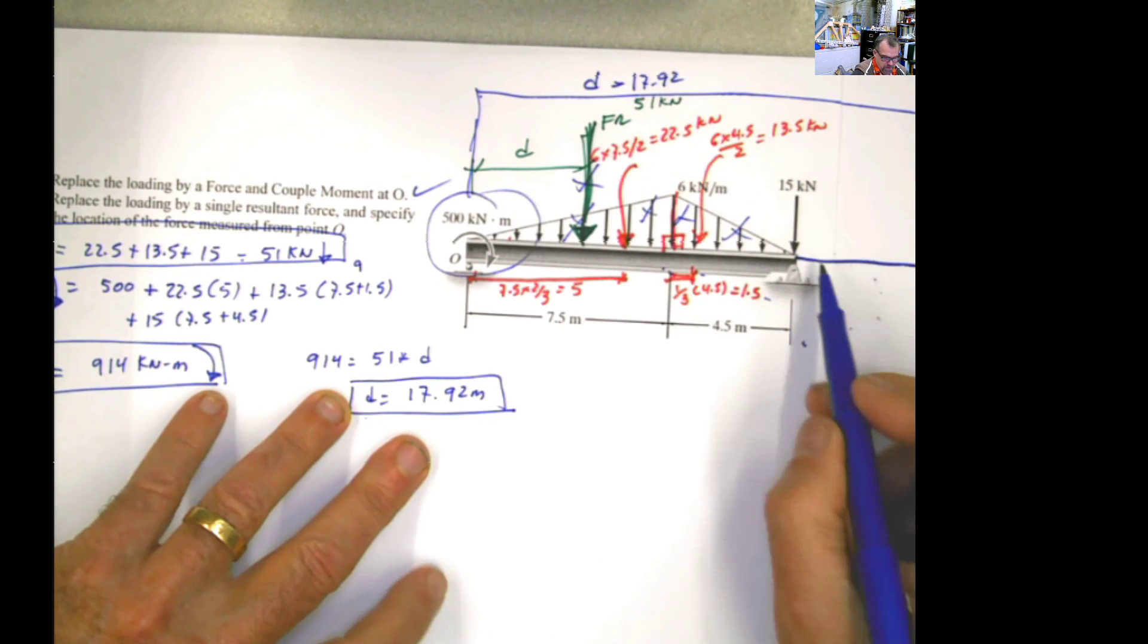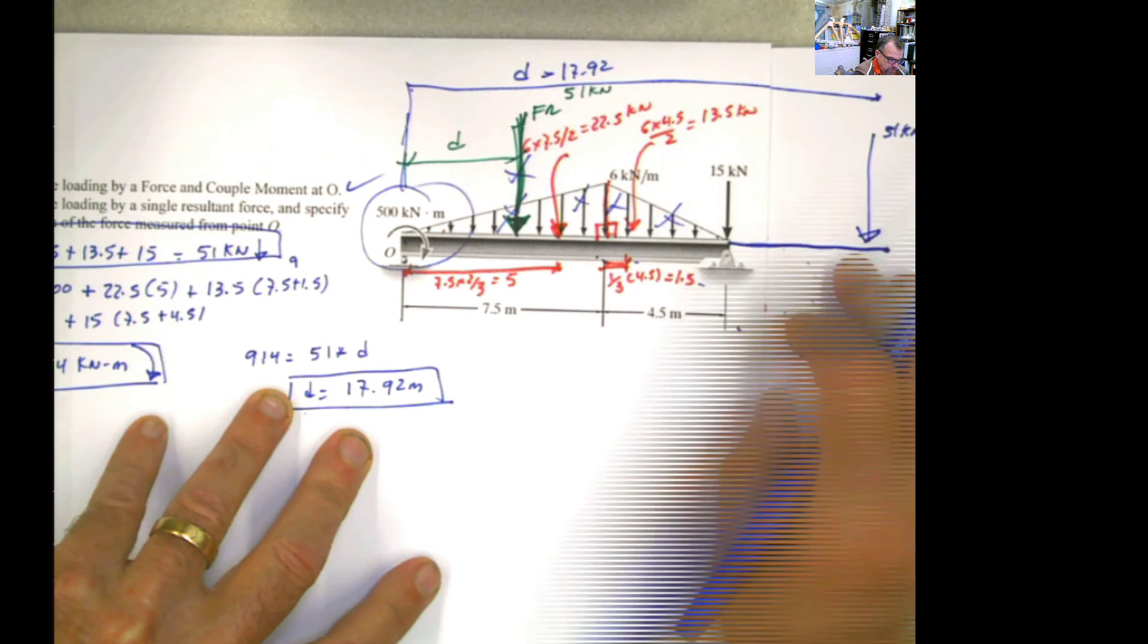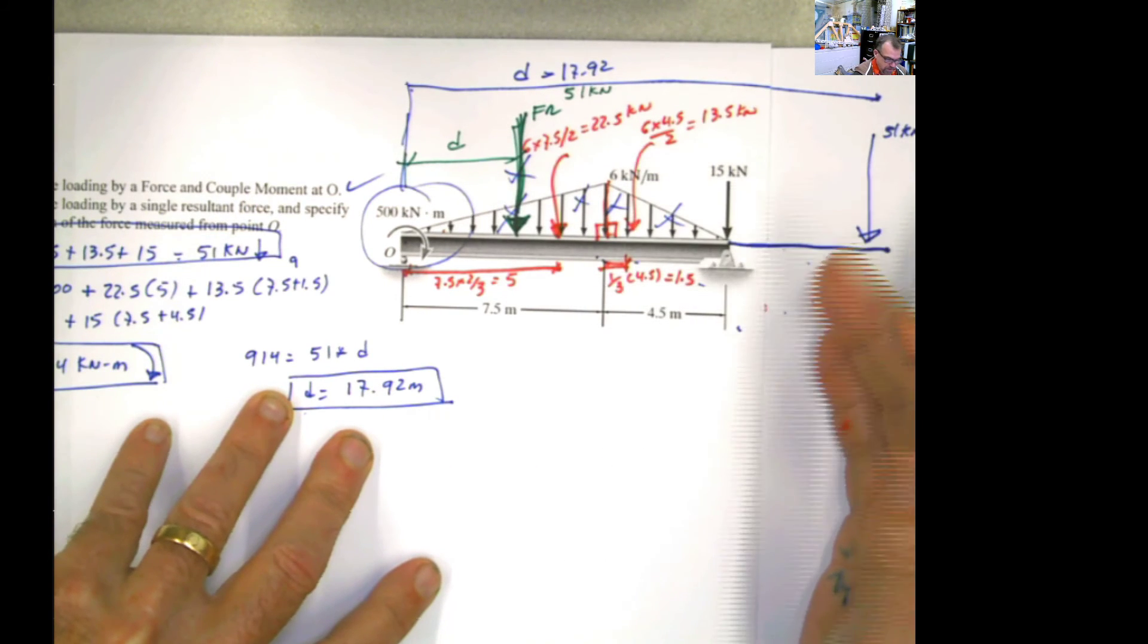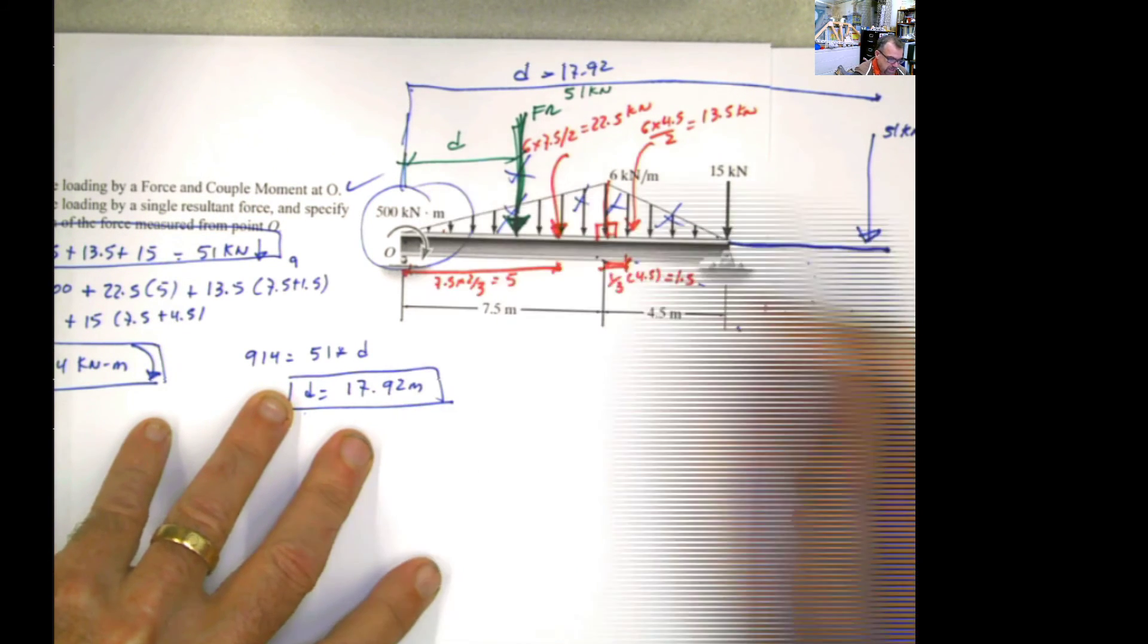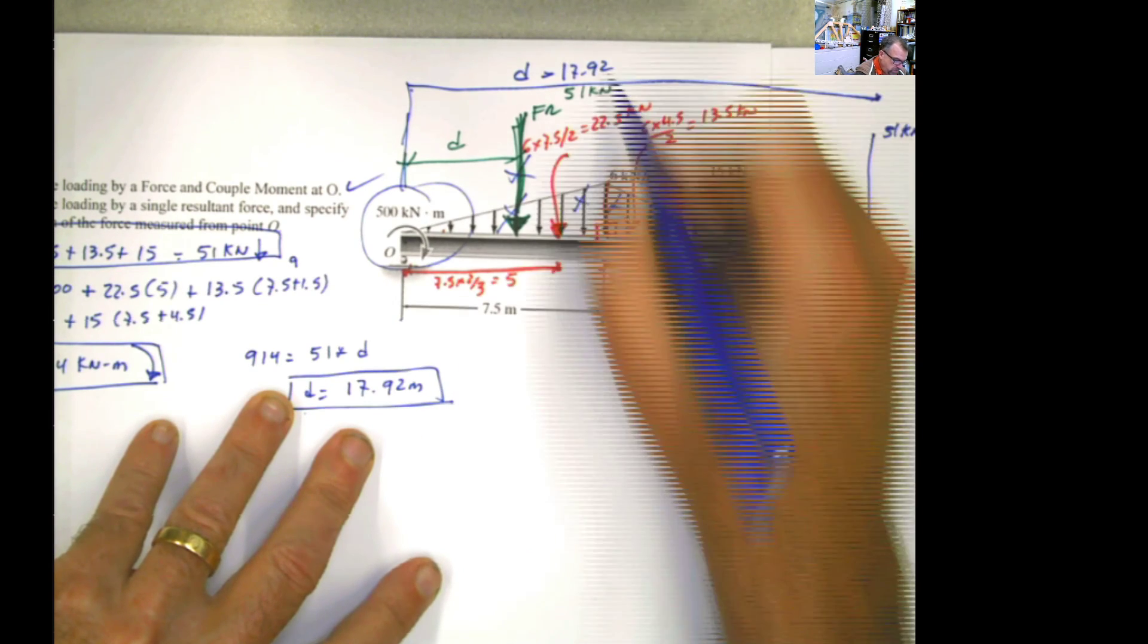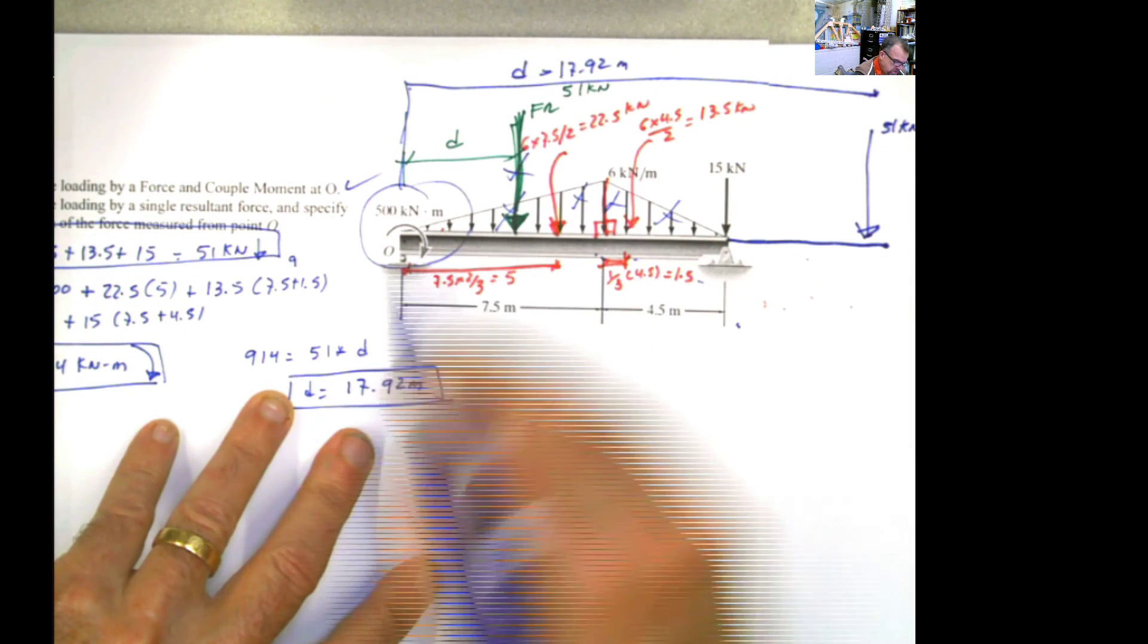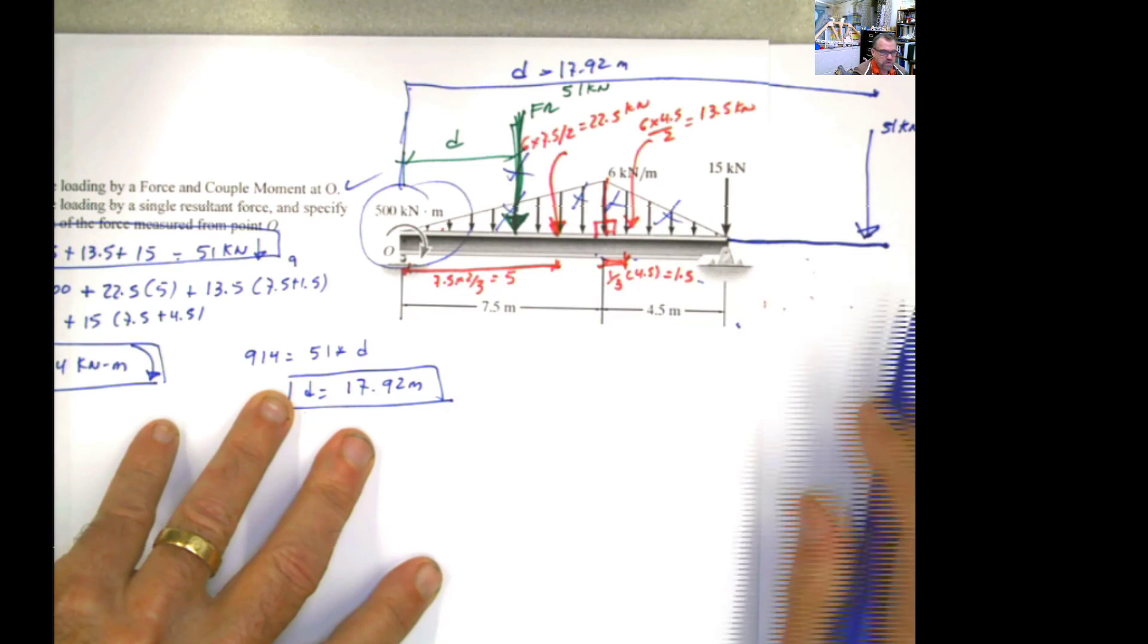The distance here should be equal to 17.92 meters. Realistically, this is impossible because you don't have any other beam. But theoretically, that is the answer of the problem. The force should be placed 17.92 meters away from point O to produce the same effect as all the other forces combined.